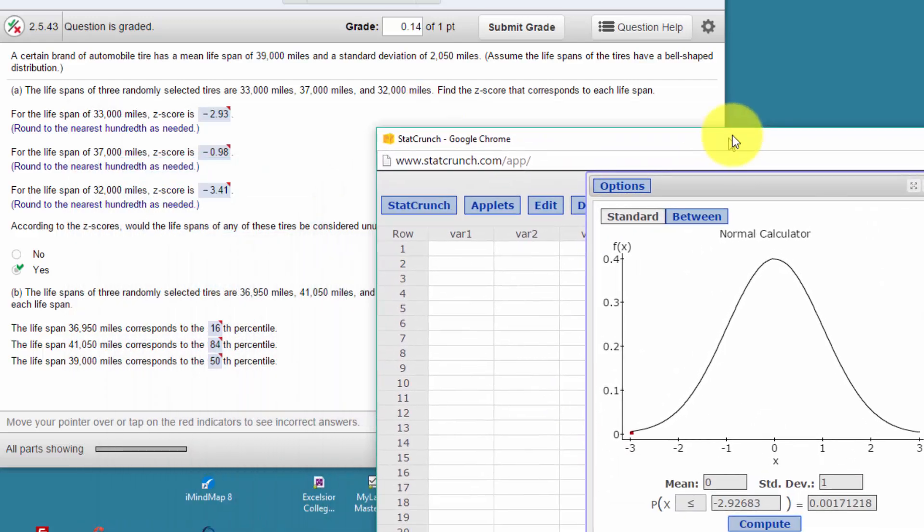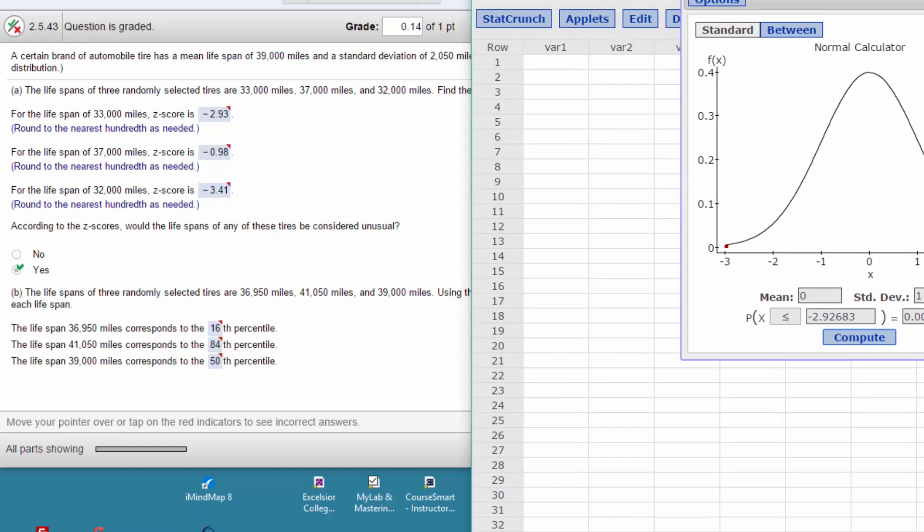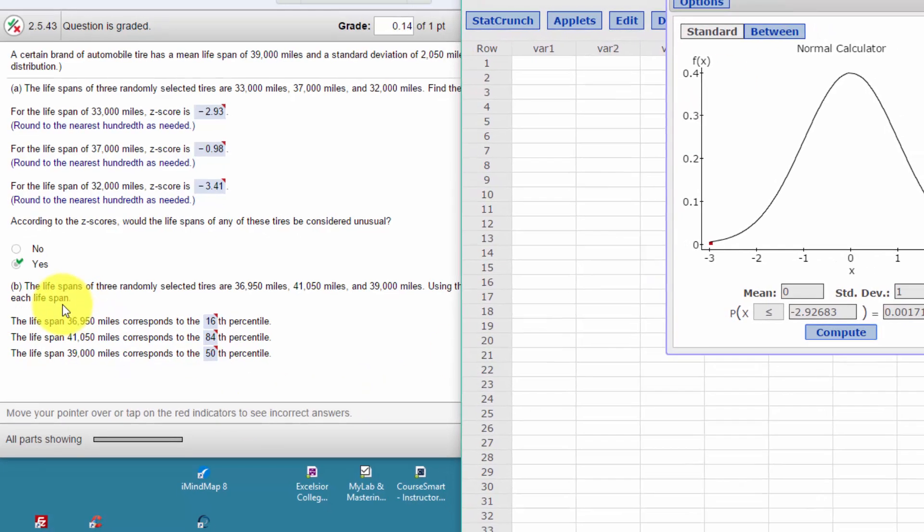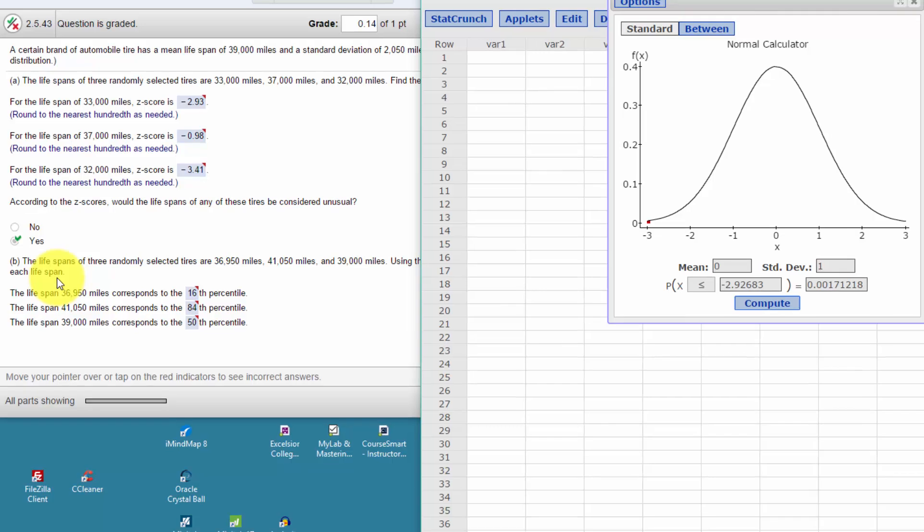So let's go down to the other part of this question. It says in Part B, we're given the lifespans of three randomly selected tires: 36,950, 41,050, and 39,000 miles.